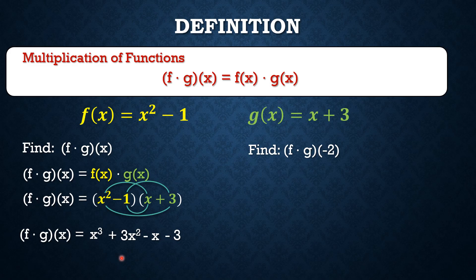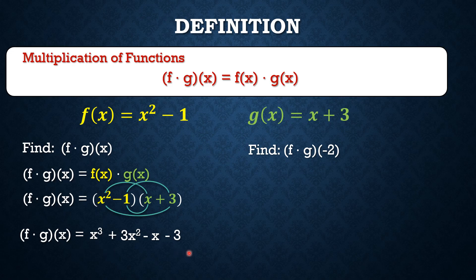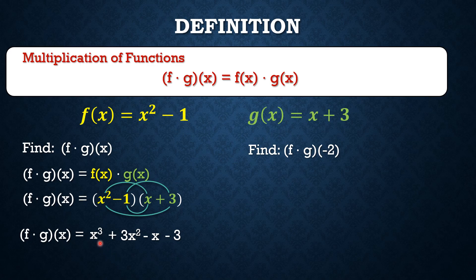And in this case, we always look to see if there are any similar terms. Because if we have similar terms, we must combine them together to further simplify this expression on the right side. If we look, there's only one third degree term, which is x³. So there's nothing else to combine with it.